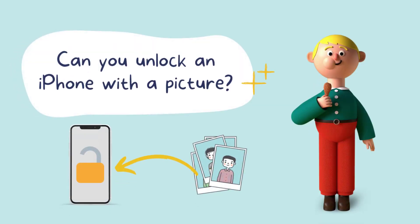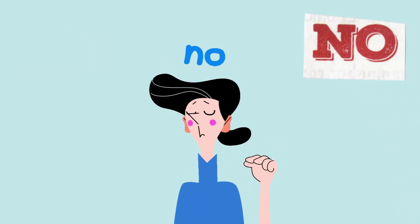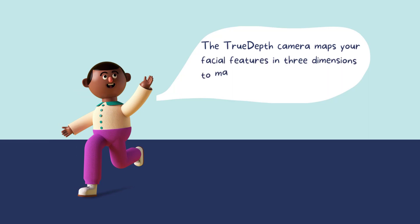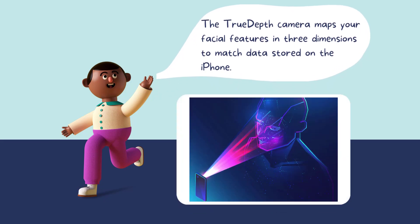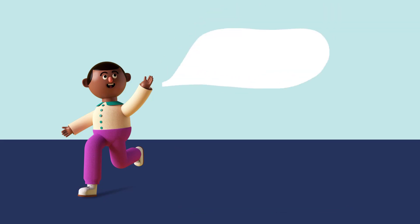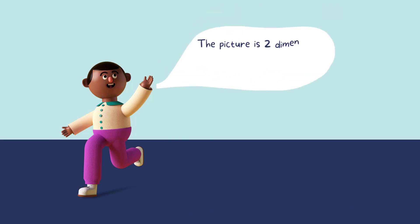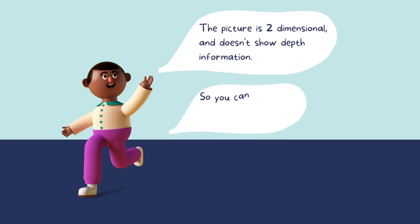Many iPhone users ask: can you unlock an iPhone with a picture? The answer is absolutely not. The TrueDepth camera is required when you use Face ID to unlock, and it maps your facial features in three dimensions to match data stored on the iPhone. A picture is two-dimensional and doesn't show depth information, so you can't use a photo to unlock the iPhone.